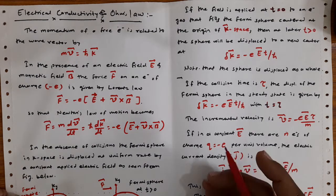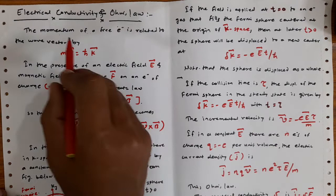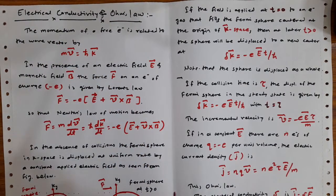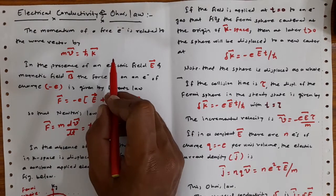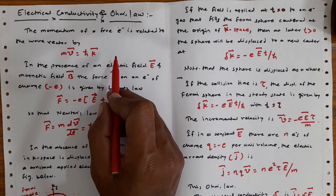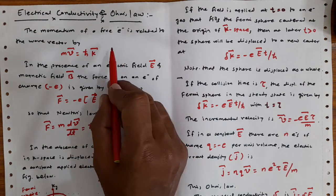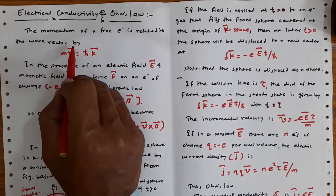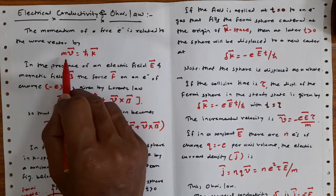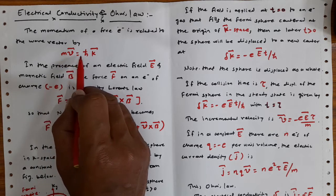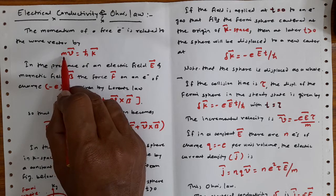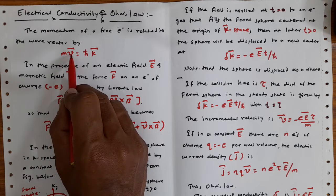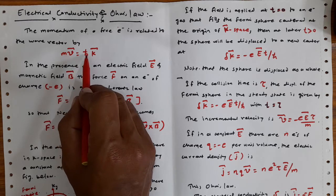Hello friends, in continuation with the last lecture, today we are going to talk about electrical conductivity and Ohm's law. As we can understand from the free electron theory or free electron model, the momentum of a free electron is related to the wave vector by the relation m·v̄ = ℏk̄, where m is the mass of an electron, v is the velocity, ℏ is the reduced Planck's constant, and k̄ is the wave vector.